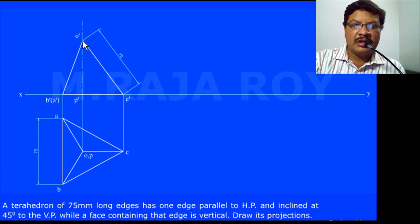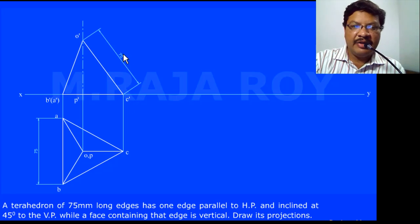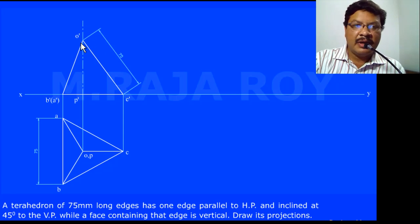To get O', take C' as center, 75 mm as radius, and draw an arc. You will get O'. After that, join O' and B' to obtain the front view.